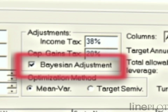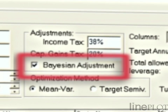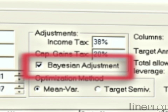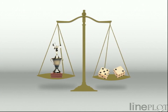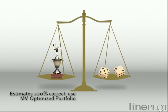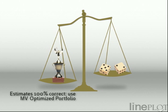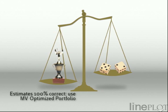The ART optimiser handles the risk of being wrong in a powerful way with a Bayesian adjustment. Here is how it works: if we believed that our estimates were completely accurate, then a traditional mean variance optimisation would represent our most rational investment — a portfolio on the efficient frontier.